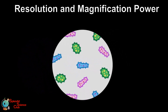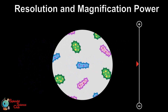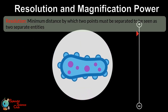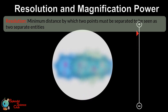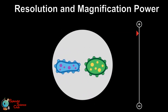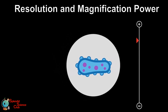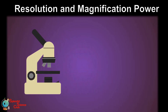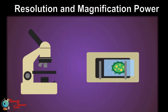Let's get to know about resolution and magnification. Resolution is the minimum distance by which two points must be separated to be seen as two separate entities. The image is unclear when the resolution power of the lens is low. From lenses with higher resolution you can obtain a clear image.